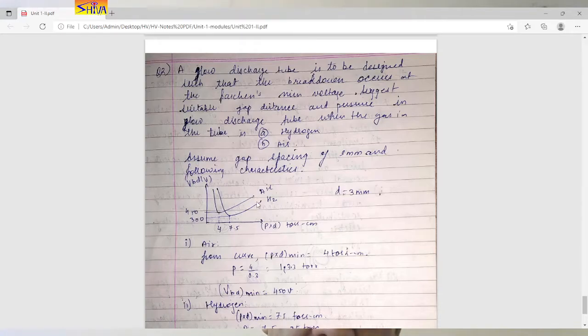If you consider air, this is the characteristic. Minimum breakdown voltage is 450 volts and minimum p into d is 4 torr centimeter. So first we compute this for air.